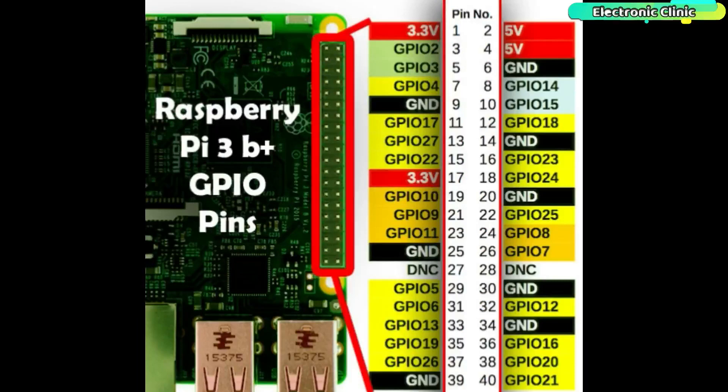Unlike the Arduino boards, the Raspberry Pi also supports I2C communication. In Raspberry Pi, the I2C pins are 3 and 5. Pin number 3 is the SDA and pin number 5 is the SCL. Pin number 1 is the 3.3V and pin number 6 is the ground. We will use 3.3V to power up the OLED display module.